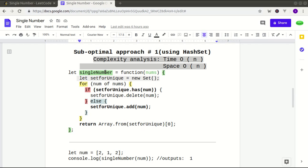Starting off, I have the single number, which is referencing my function to find the unique number in the integer array nums, which is the parameter of my function. And I'm going to be using a set data structure, which I've initialized here, which is referenced inside the variable that I called setForUnique.